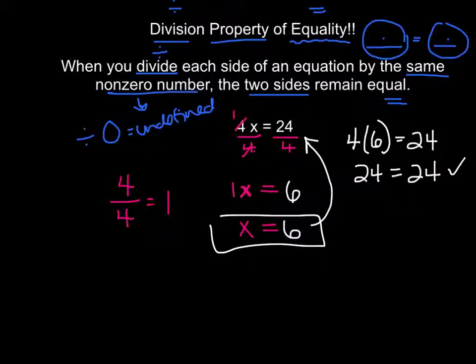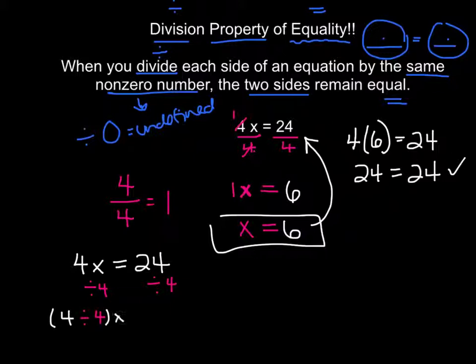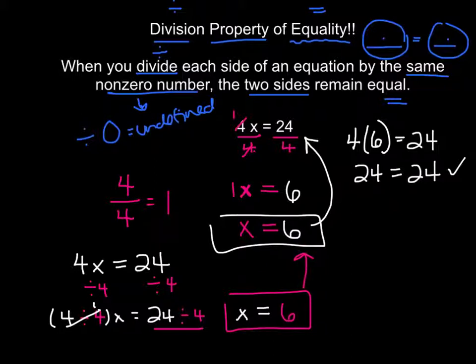So that is one version of this equation. We can also write this differently. We can say 4x is equal to 24, and we can show this work in a different way. We can say I'm going to divide this side by 4 and I could divide this side by 4. So this can be written as 4 divided by 4, all of this times x is equal to 24 divided by 4. 4 divided by 4 we know this all becomes 1, so we have simply x is equal to 24 divided by 4, which is 6. Same answer, different way to show it.